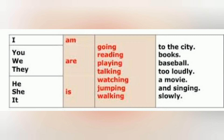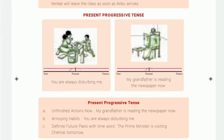In page 123, three uses of present progressive tense are given. First: unfinished actions happening now. For example, 'My grandfather is reading the newspaper now,' 'The boy is sleeping on the bed,' 'Ronnie is going to school,' 'They are writing a composition.' The action is not yet finished, so we use present progressive.